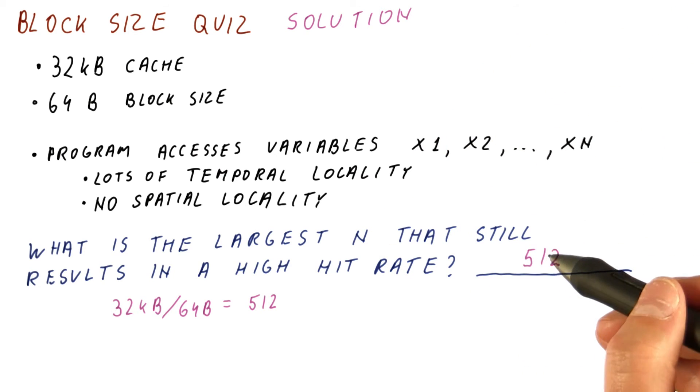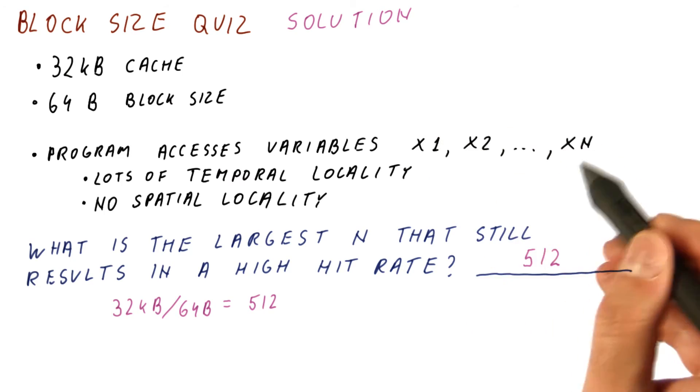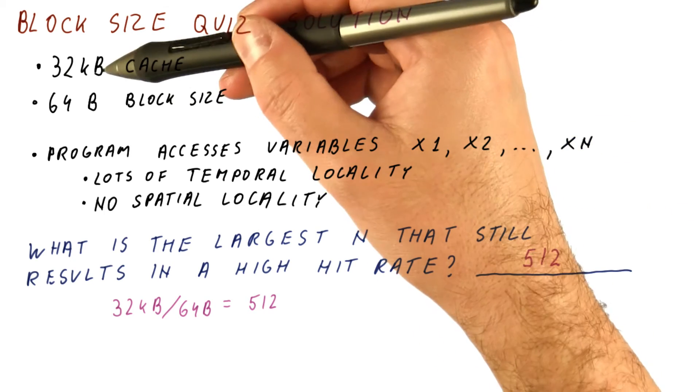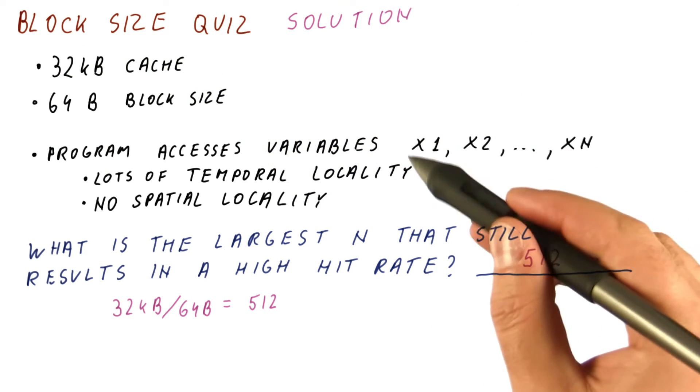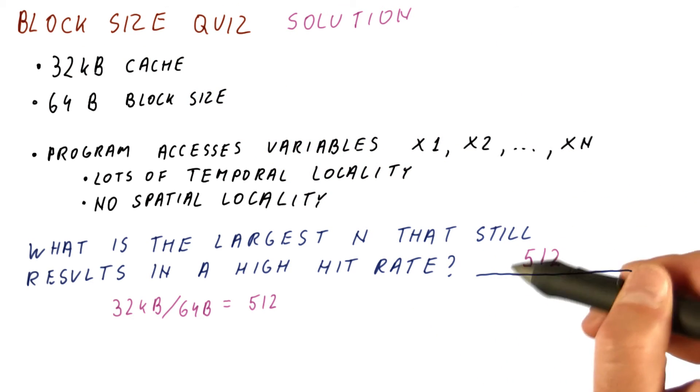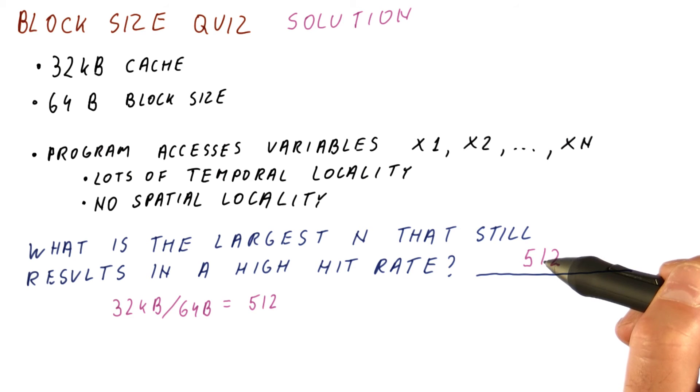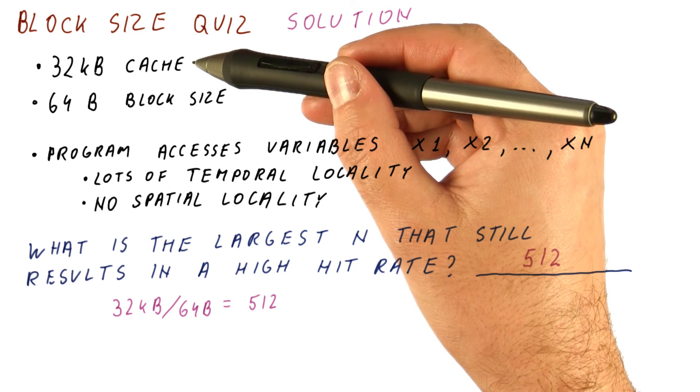But if we have more than 512 variables, then even though there is plenty of space in the cache, if it's 4 byte variables, 512 variables is 2 kilobytes worth of actual stuff that we are using. The block is much larger than that.